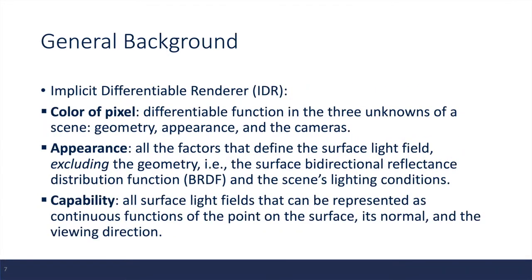So in this work, the authors introduce something called the implicit differential renderer. Under this model, the color of the pixel is a differentiable function of three unknowns: the geometry, the appearance, and the cameras.